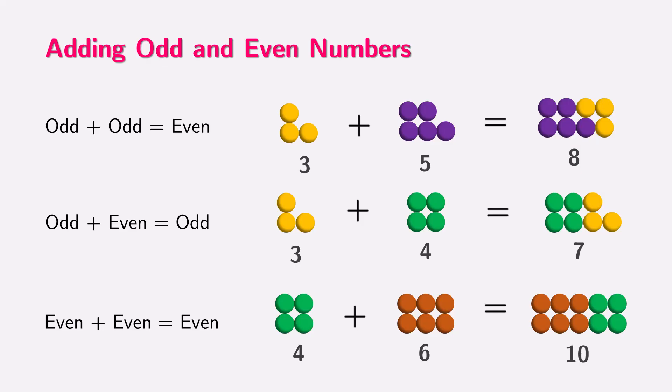When we add an odd number and an even number, like 3 and 4, the result is an odd number, 7. This happens because the even number already makes perfect pairs, and the odd number adds one extra dot that doesn't have a pair, so the total remains odd.